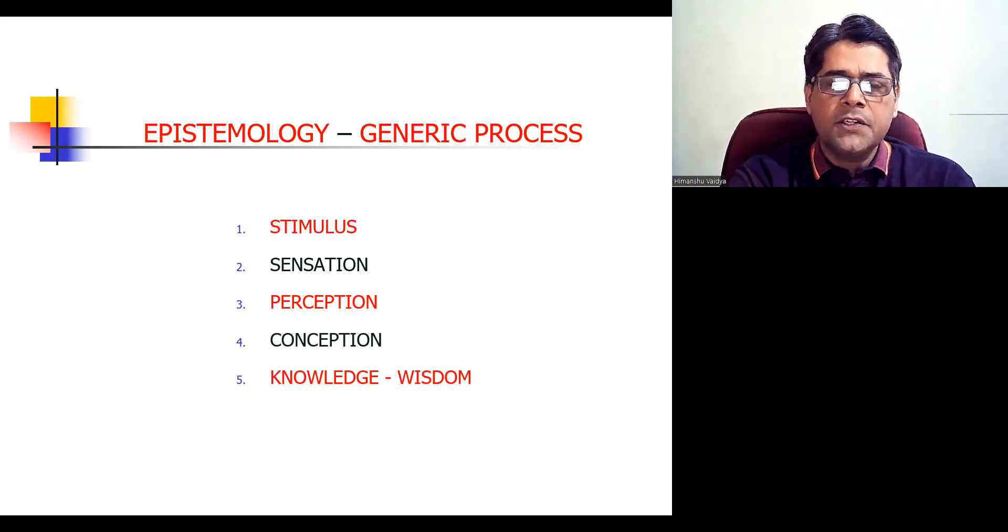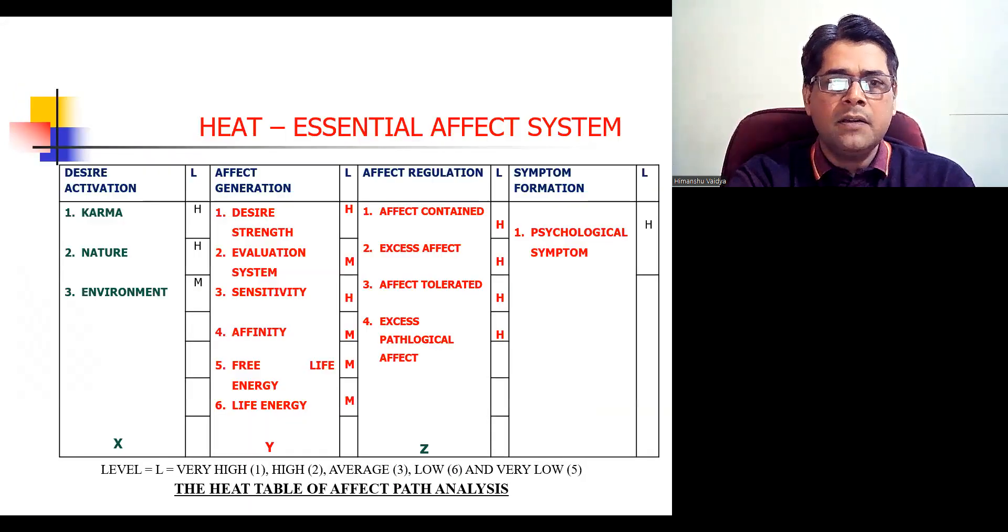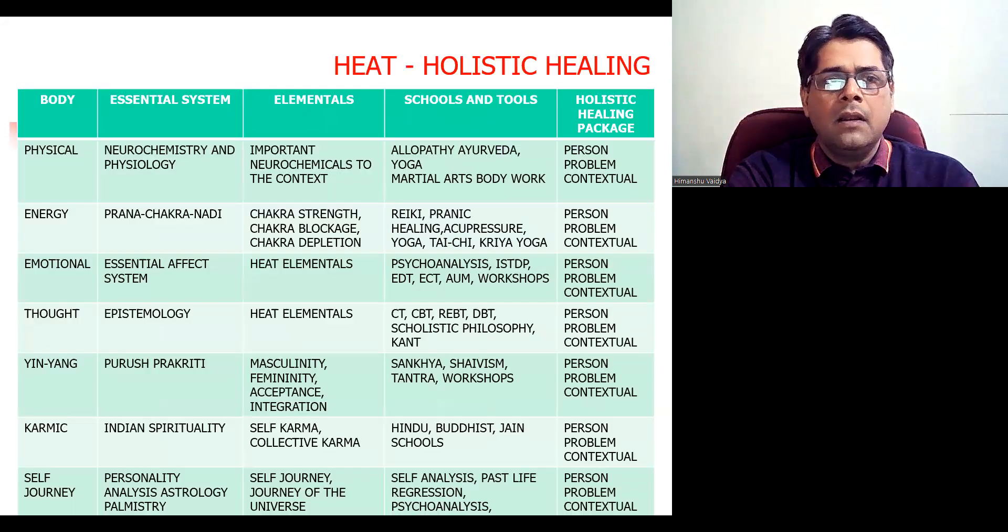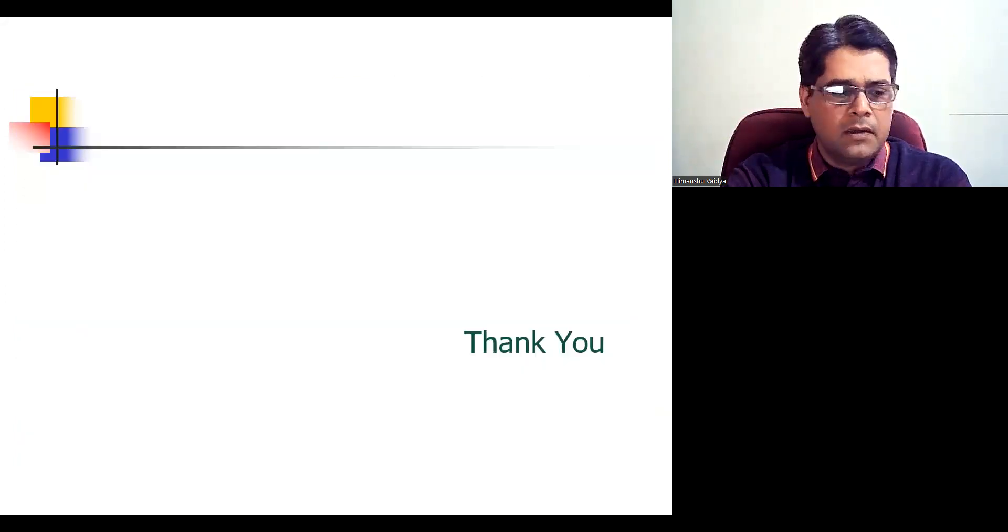Three referential material, we have seen it before, the generic epistemological process, the fundamental epistemological elements, and the heat essential affect system. And from where the holistic healing basket from which we create customized holistic healing solutions. Thank you.